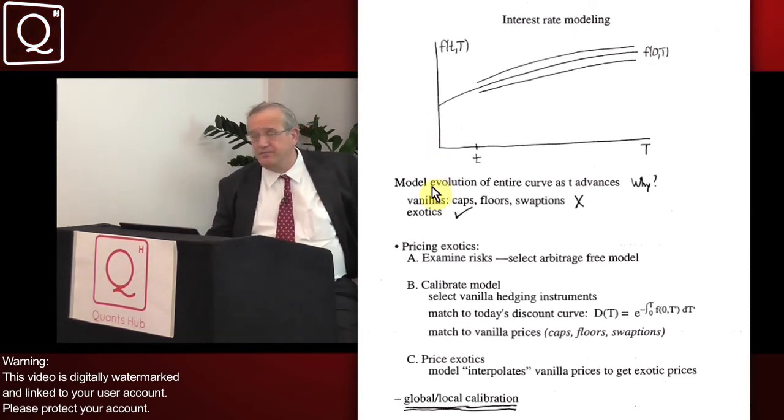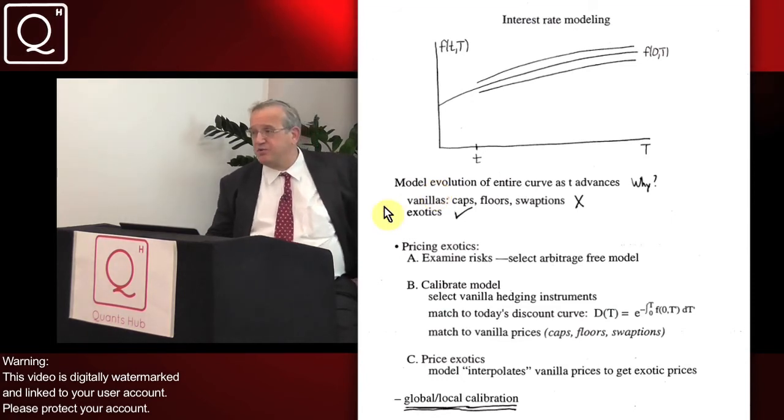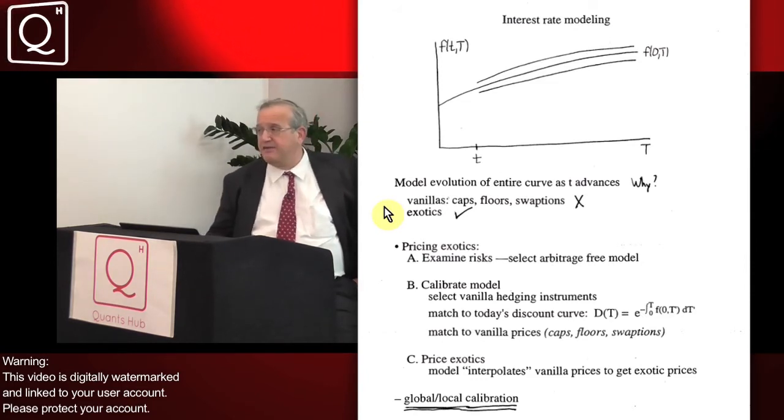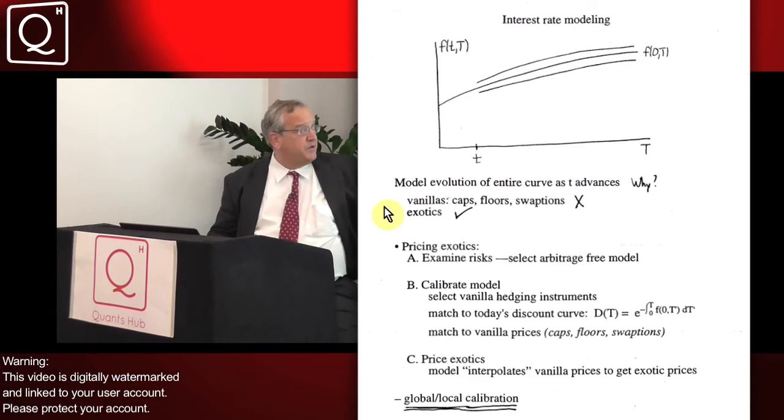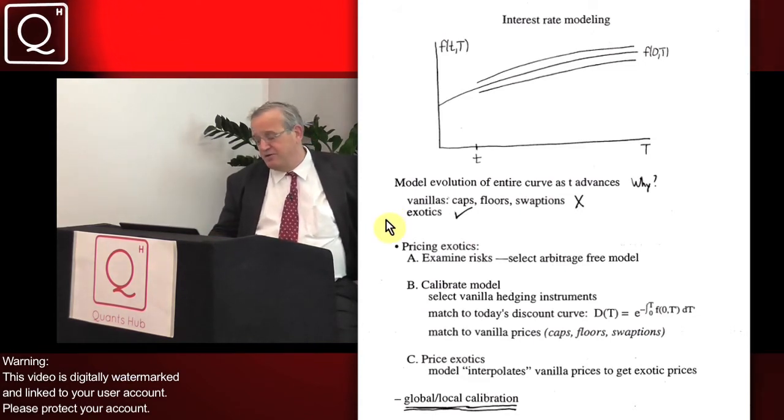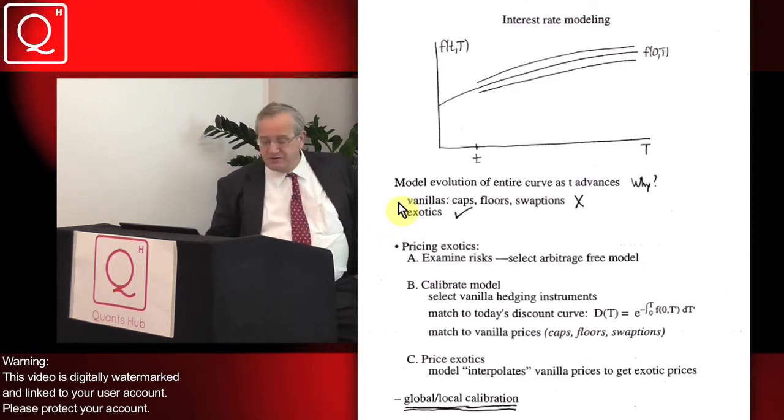If this is so much fun, the first question is why should we do it? Well, you shouldn't do it to price the vanillas - your caps, floors, and swaptions - because for those you can get by with Black's formula and a clever smile model. The reason you do it is to price exotics. What's an exotic? Basically anything you think you can't price using Black's formula and smile models.